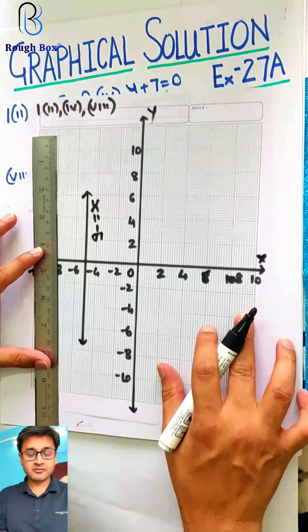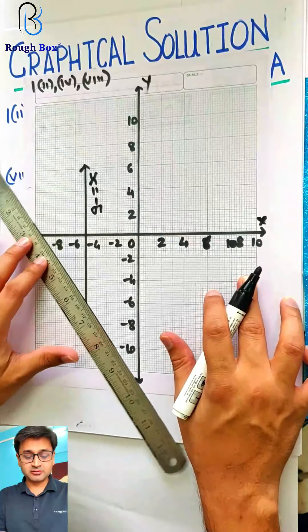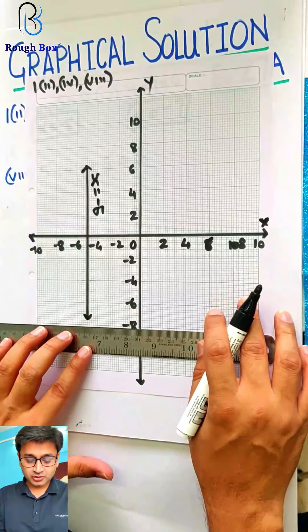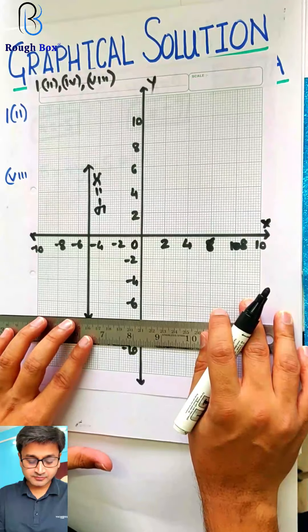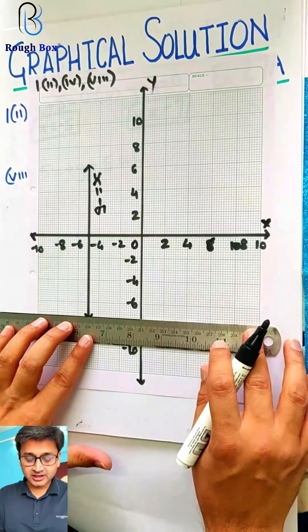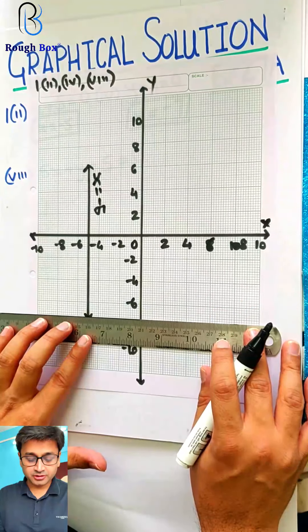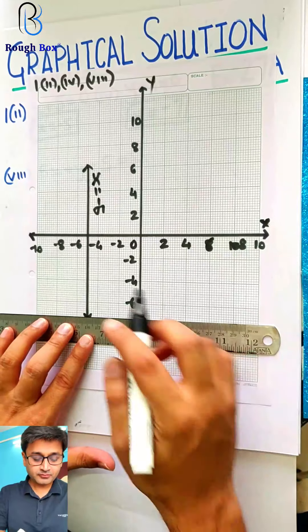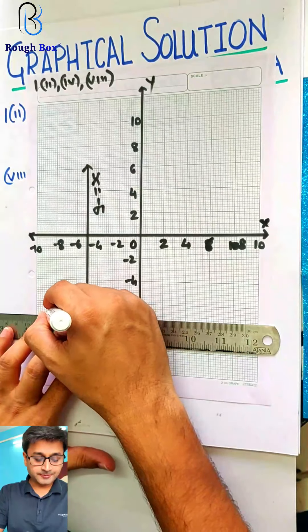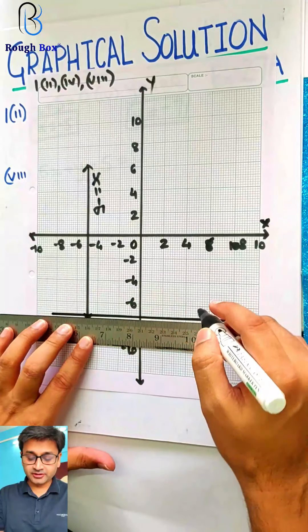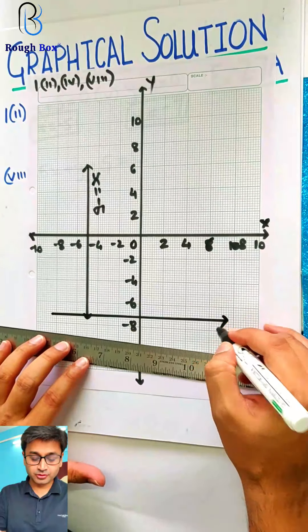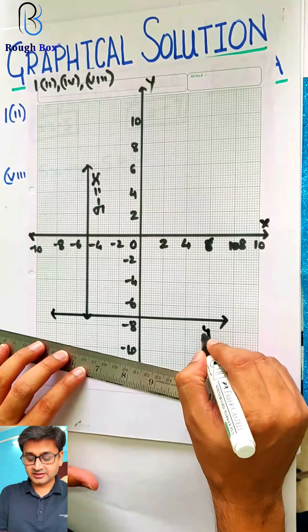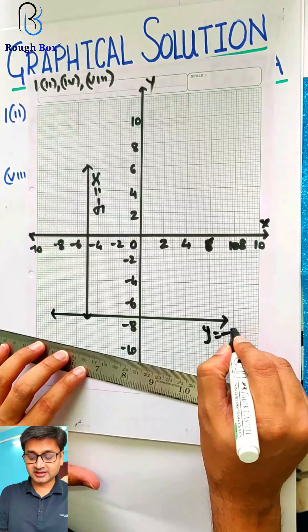Second one: y is equal to minus 7. Do it on the same graph sheet in order to save paper. This is y is equal to minus 7.